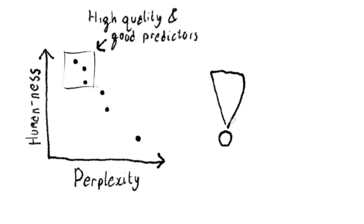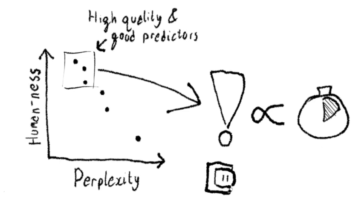If you take words that these better language models find surprising, they line up with words that human beings spend more time processing. This was the general trend, until we reached the transformer model.